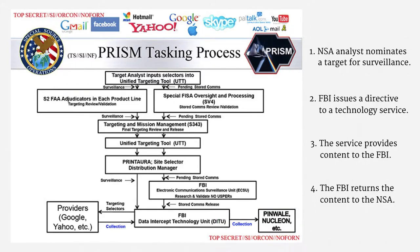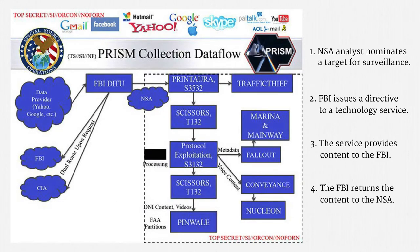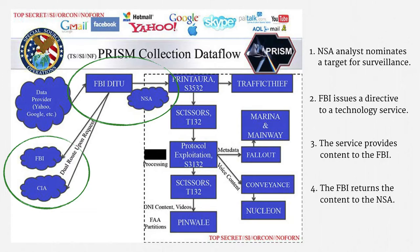Let me rephrase with another NSA slide. The process begins with an NSA analyst suggesting a surveillance target, including some technical criteria for picking out that target's communications. Then the FBI serves a Section 702 directive on the technology service that the target is using. The service provides communications content back to the FBI in response. Finally, the FBI distributes the content it has received — that content always goes to the NSA, where it's internally analyzed in a number of ways. Sometimes copies are also provided to the FBI or to the CIA.